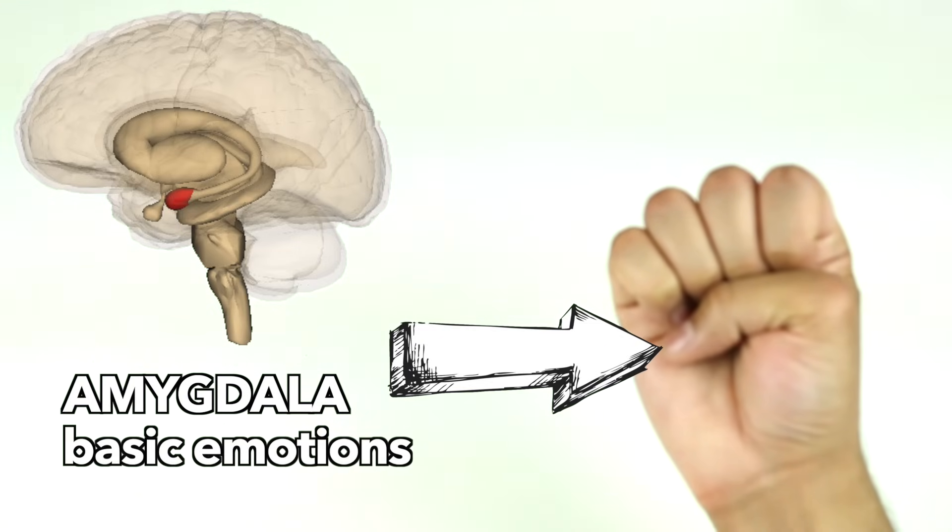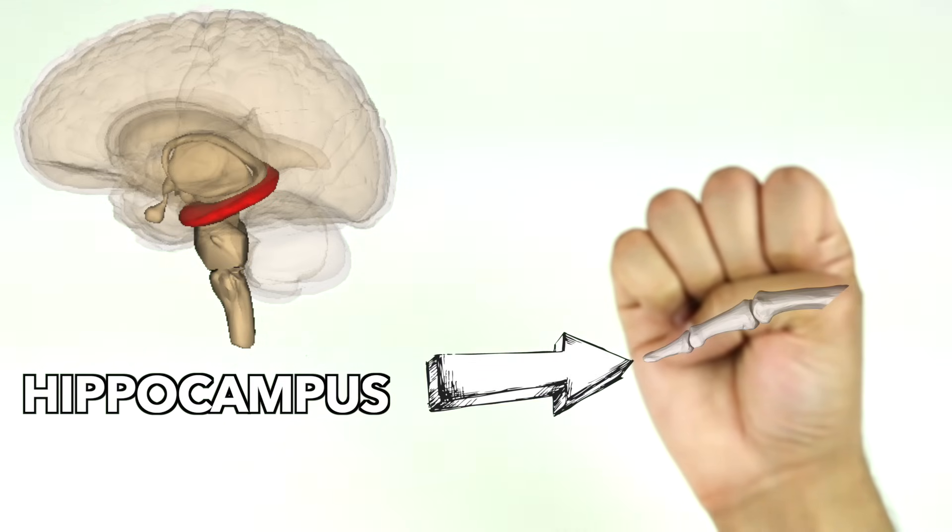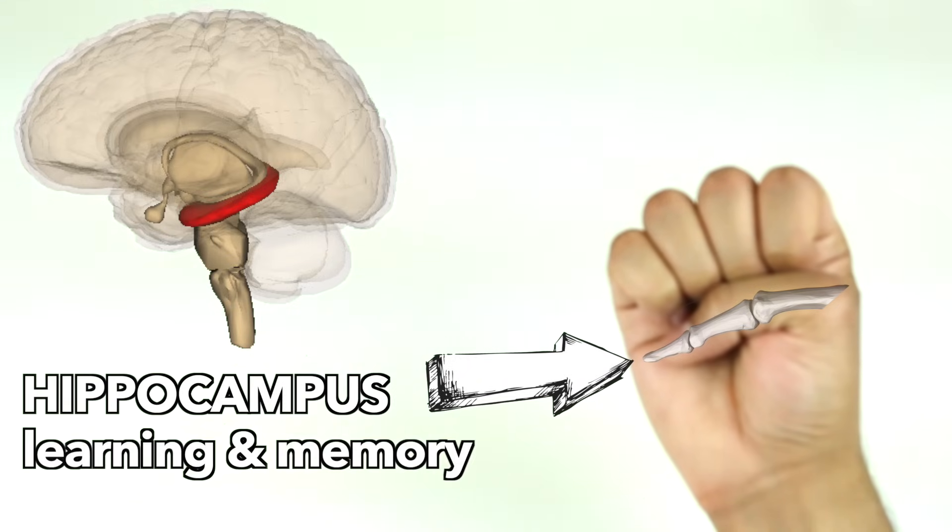Further inside your thumb is the hippocampus. It's sort of where the bone is in this part of your thumb. The hippocampus is responsible for learning and memory.